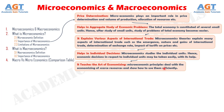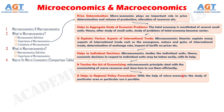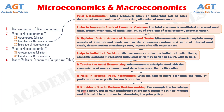Importance number six: It helps in regional policy formulation. With the help of microeconomics, the study of a particular area or particular use is possible. With its help, suggestions may be given in the context of problems of any related industry by the study of government policies. For example, the problem of the textile industry may be studied with reference to government policies and necessary suggestions may be given. Importance number seven: It provides a base to business decision making. The knowledge of price theory has its own significance in practical business decision making and it is useful to a business in determining the price policy.